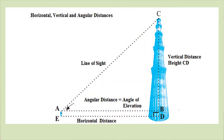In this slide we have shown the different aspects: the horizontal direction ED, vertical distance that is height CD, and line of sight — that is the angle of elevation or angular distance.